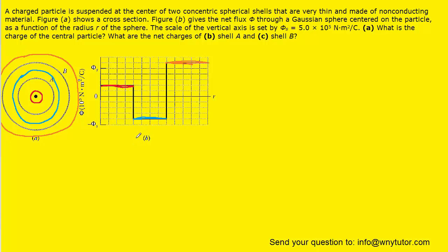For Part A, in order to determine the charge of the central particle, we're going to use Gauss's law. We'll choose the Gaussian surface that only encloses that central charge. According to Gauss's law, a constant multiplied by the electric flux equals the amount of charge enclosed in the Gaussian surface. We're choosing the Gaussian surface to surround only that central charged particle, which will allow us to calculate that charge.